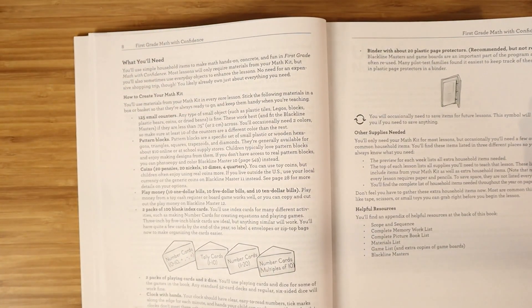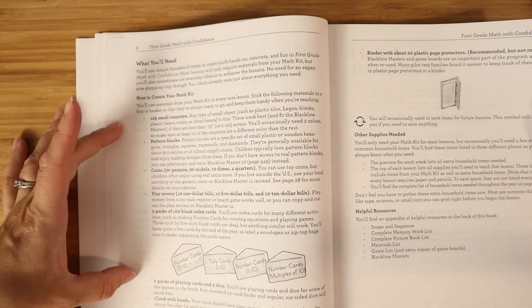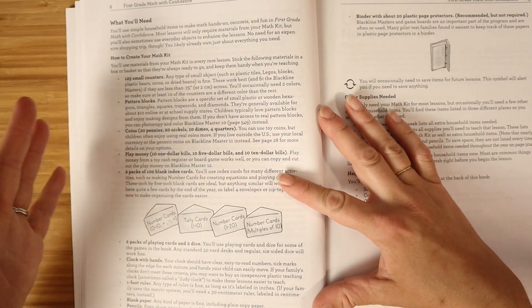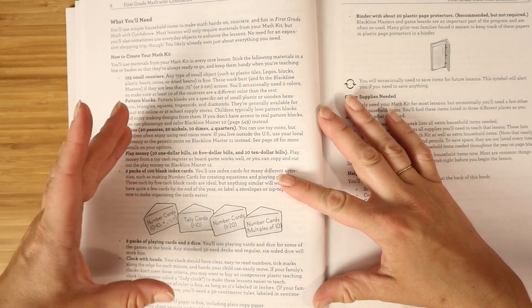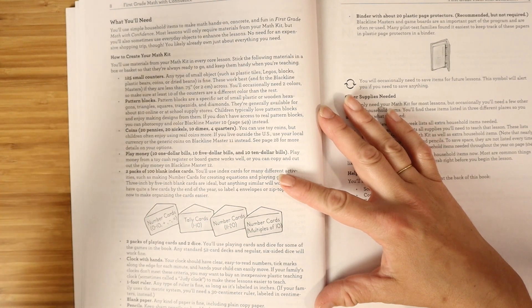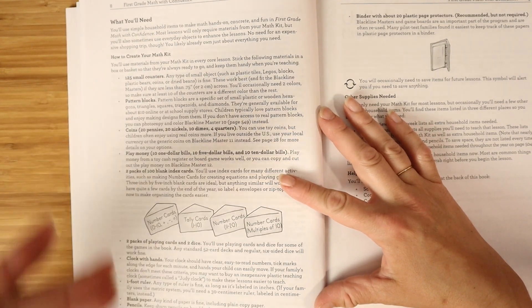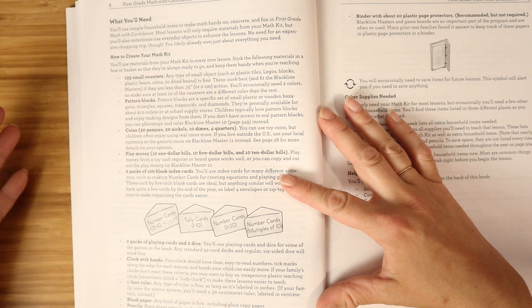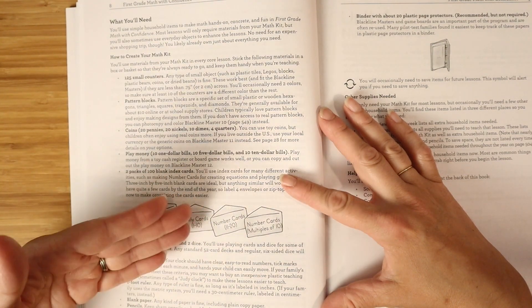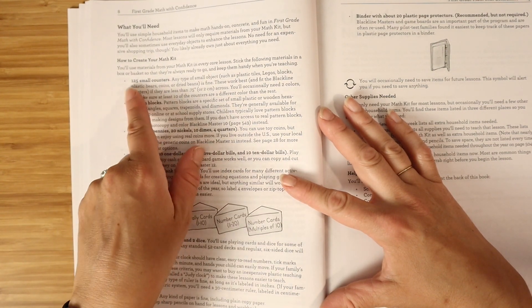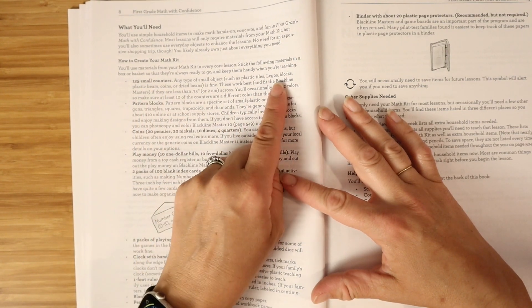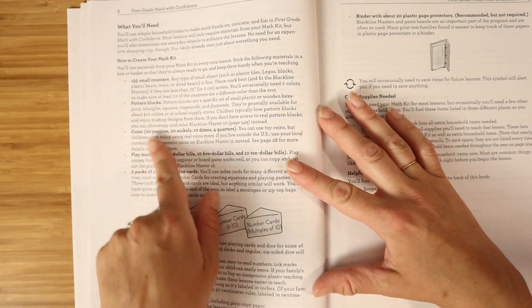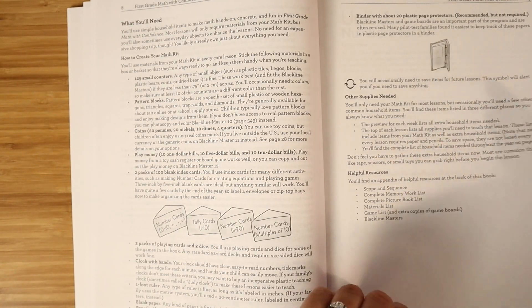What you'll need throughout the program, this is your math kit. Kate Snow's programs find the balance between having hands-on objects so that you can work in that concrete stage, but also keeping it budget-friendly. They usually only require a few types of manipulatives to be purchased, and then there are suggestions for things you can use around your house. For example, we talk about 125 small counters, and they give you examples like Legos and blocks.